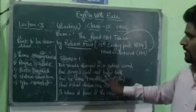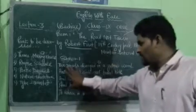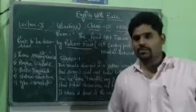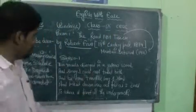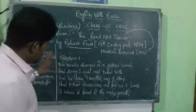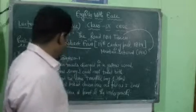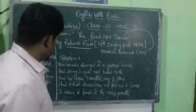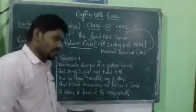Now, stanza number one of The Road Not Taken. I will read line by line to explain what message each line conveys: 'Two roads diverged in a yellow wood, And sorry I could not travel both, And be one traveller, long I stood, And looked down one as far as I could, To where it bent in the undergrowth.'